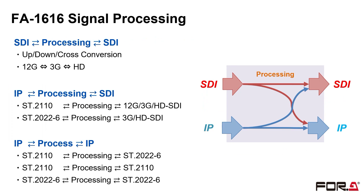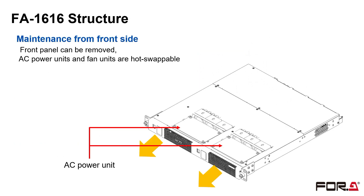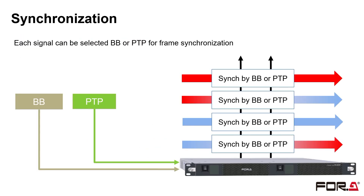Signal processing such as SDI to SDI, IP to SDI, and IP to IP can be done in this way. The rear view looks like this. The structure of the FA1616 is as shown here, and maintenance can be performed from the front. Synchronization can be set for each system by selecting BB or PTP.